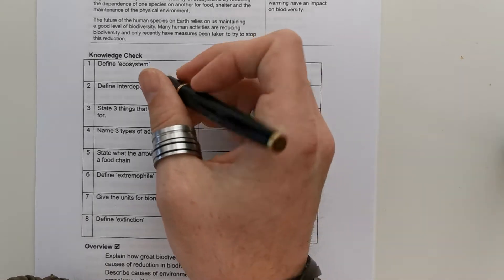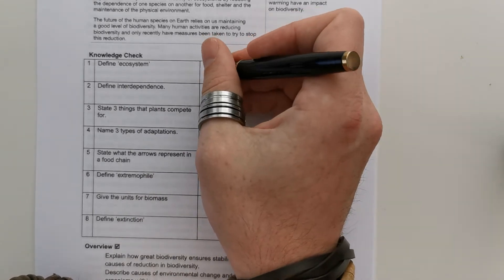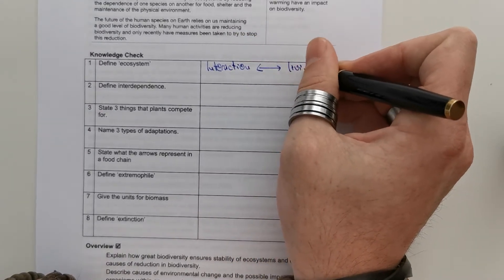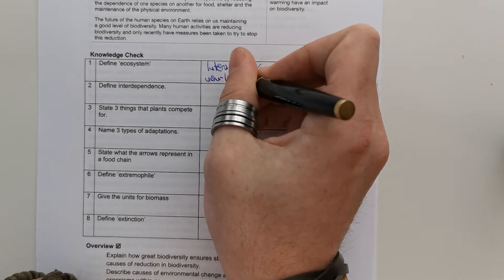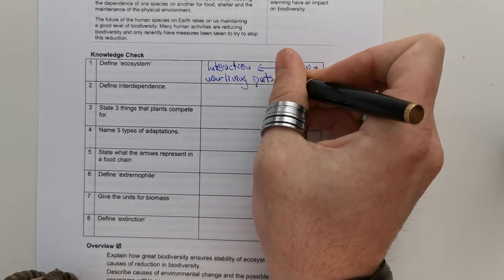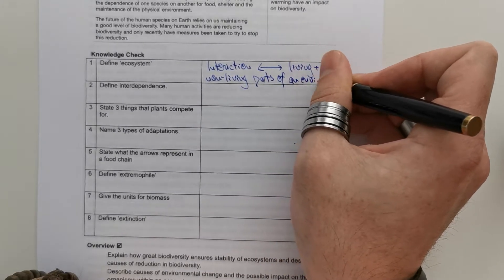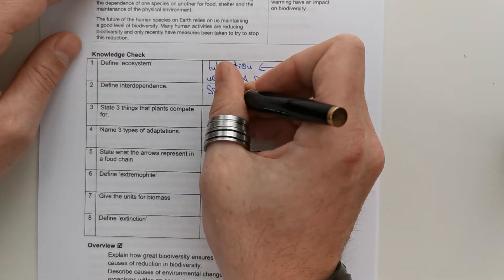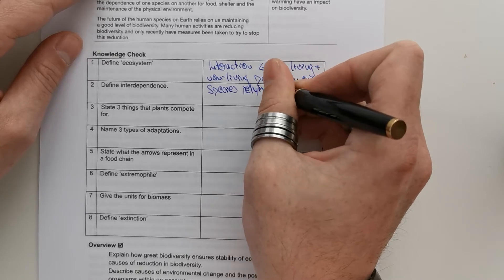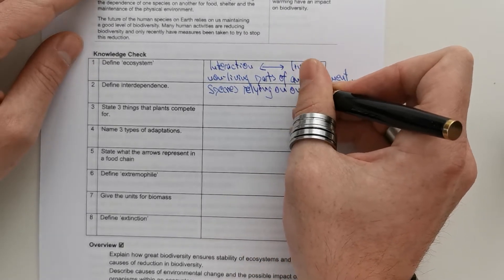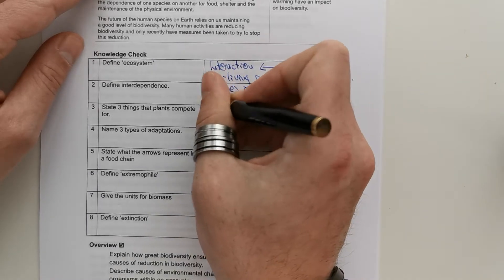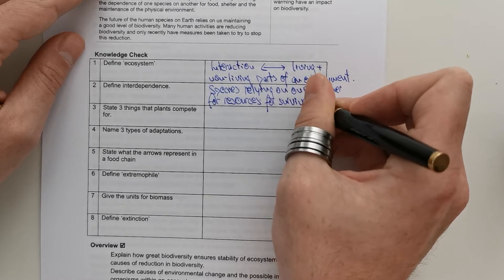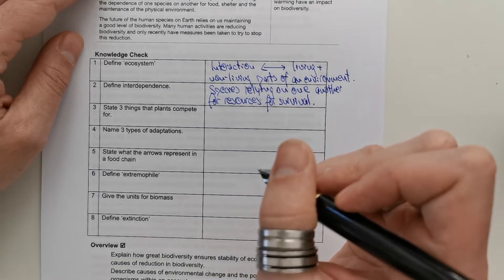Right, you should have unpaused the video, so let's remind ourselves of some of the different answers here. Define ecosystem. Ecosystem is the interaction between living and non-living parts of an environment. Define interdependence. Interdependence is species relying on one another for resources for survival.